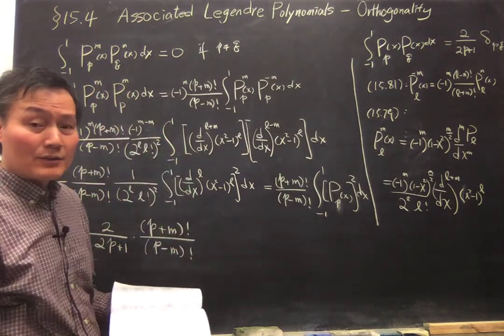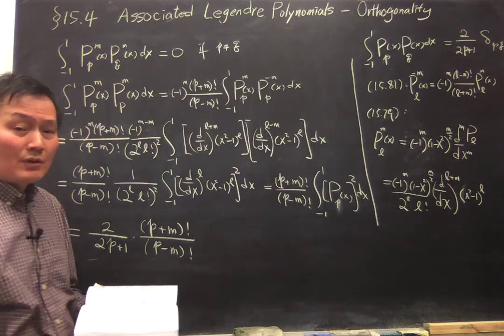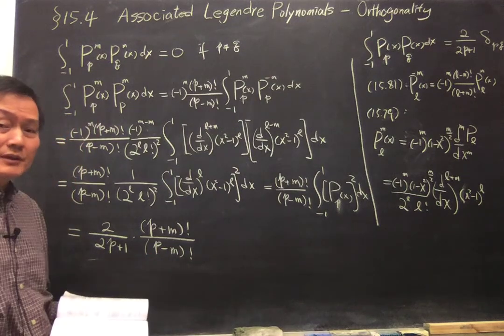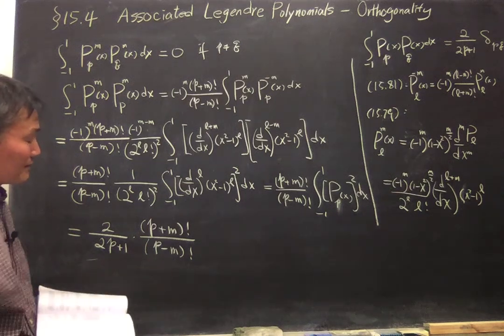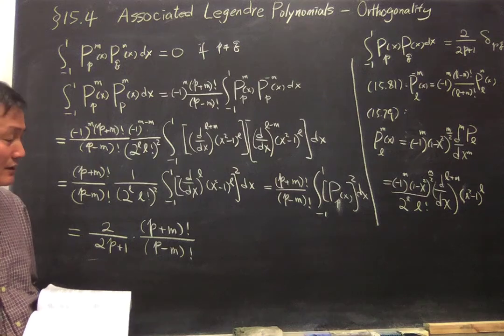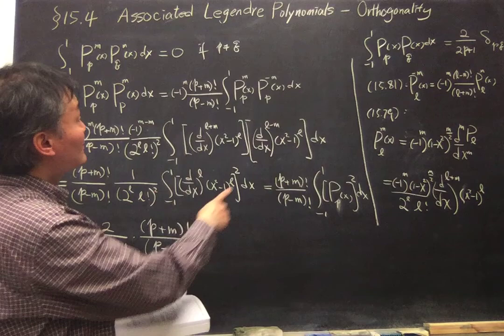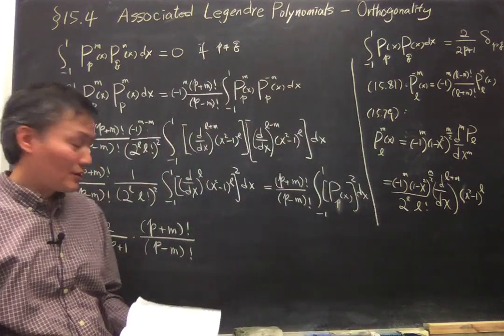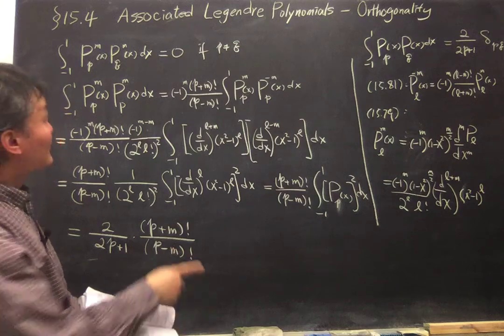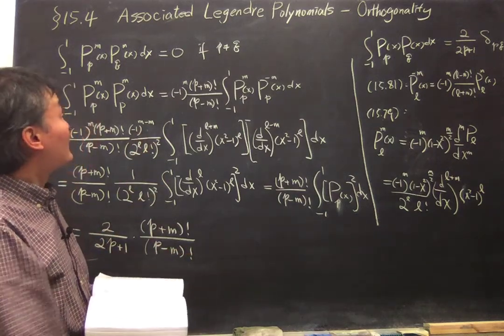This is the usual normalization when we do the integration for an orthogonal basis. Like the Legendre polynomial, we can use this to build up the Legendre series using this normalization constant and the fact that they are orthogonal.